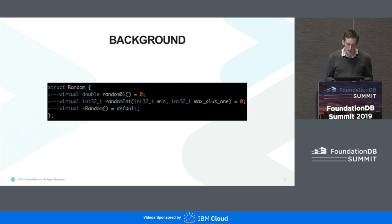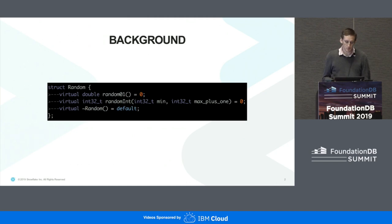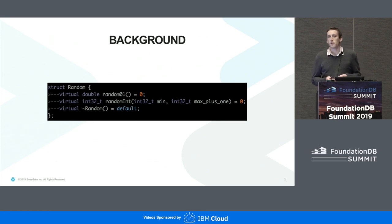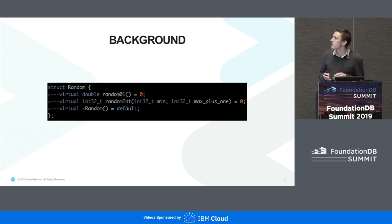This is really nice because if we have a pseudo-random number generator with a particular seed and we want to reproduce our test failure, we just run it again with that seed. But having a pseudo-random number generator kind of constrains the possible outputs of this interface.